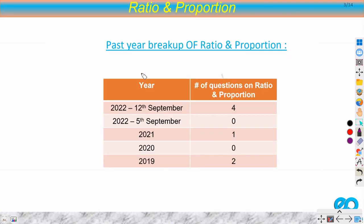Let us first discuss the breakup of this chapter. In 2022, on 5th September paper, we didn't have any question. In 12th we had 4, so this percentage was very high. In 2021 we had 1. There was again no question in 2020, and in 2019 we had 2 questions.